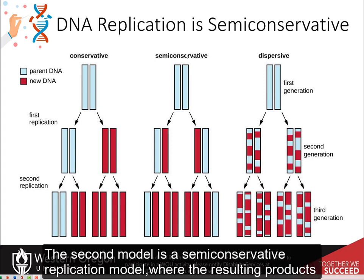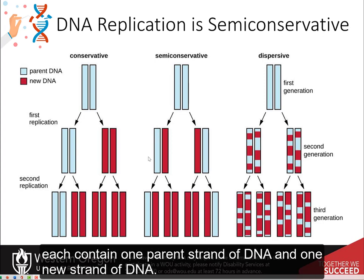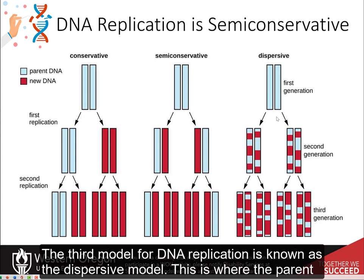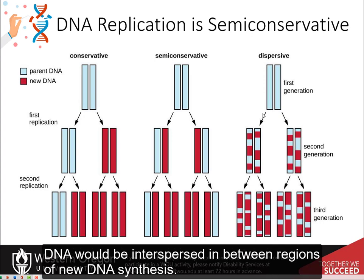The second model is the semi-conservative replication model, where the resulting products each contain one parent strand of DNA and one new strand of DNA. The third model is known as the dispersive model, where the parent DNA would be interspersed in between regions of new DNA synthesis.